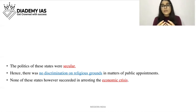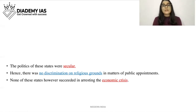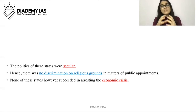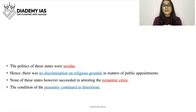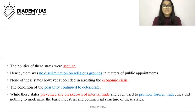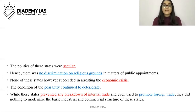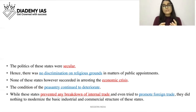The economic crisis of the time meant the rulers of Hyderabad, Bengal, and others could not fix things — the condition of the peasants continued to deteriorate and they remained poor. While these states prevented any breakdown of internal trade and even tried to promote foreign trade, they did nothing to modernize the basic industrial and commercial structure. Foreign trade increased but technology was not modernized.